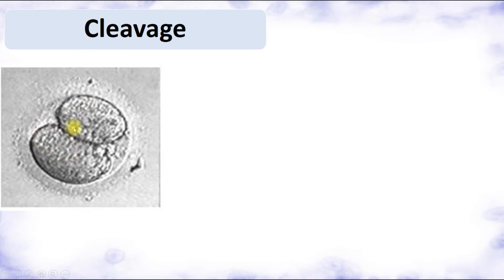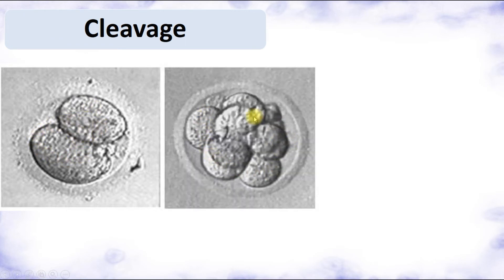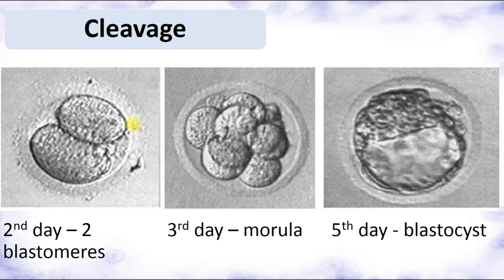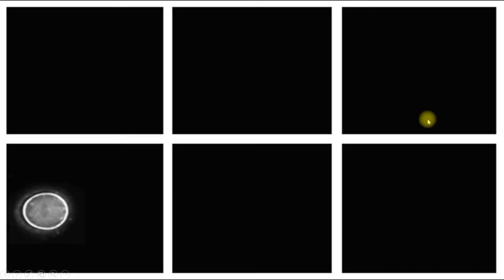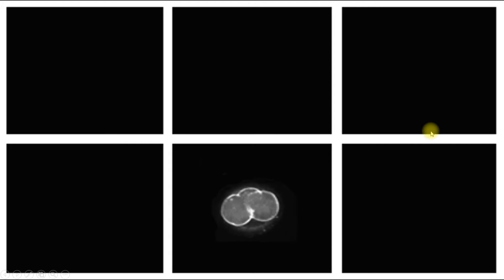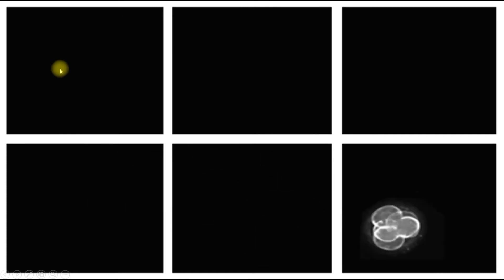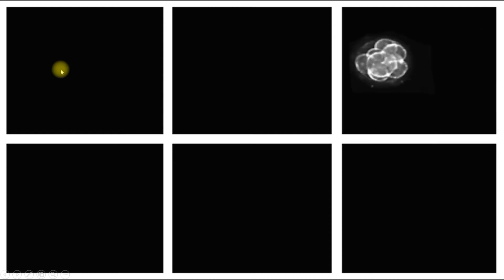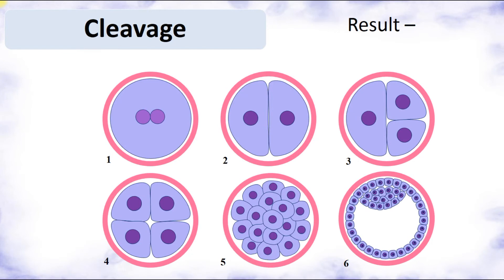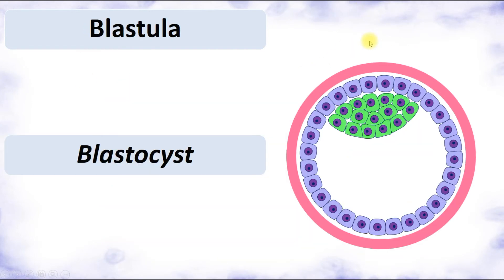Here we can see cleavage of the human embryo: two blastomeres, morula, and blastocyst or blastula. The following stages are visible: day two, day three, and day five — the blastocyst — as the result of cleavage. During the first week, blastomeres divide to form the morula, then cells produce fluid that fills the interior to form the blastocoel, producing the blastula.